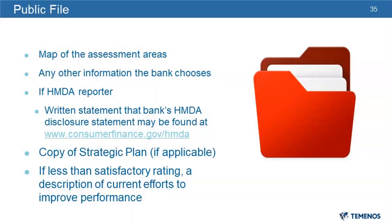If your institution is a HMDA reporter, you must include a written statement that the bank's HMDA disclosure statement may be found at www.consumerfinance.gov/HMDA. If you're examined under a strategic plan, you must also include a copy of the strategic plan, redacting any confidential information. If you have a less than satisfactory rating on your most recent CRA exam, you are required to include a description of your current efforts to improve that CRA performance on a quarterly basis. Even though the regulation requires the file to be updated by April 1st annually, you do not wait until April 1st to update that performance improvement effort — those are required to be done quarterly.